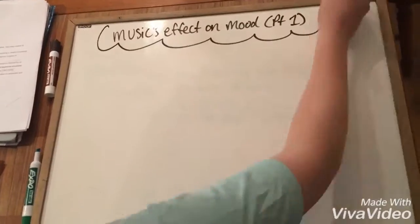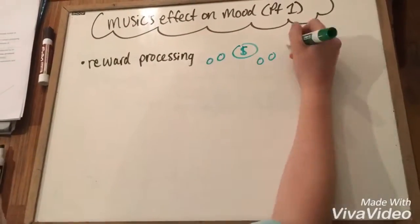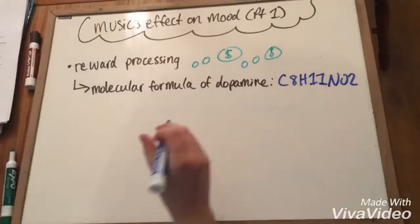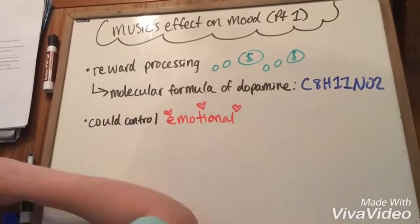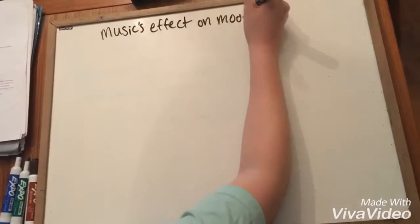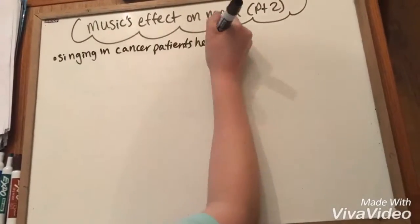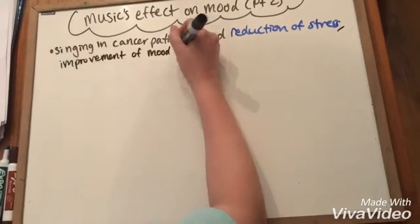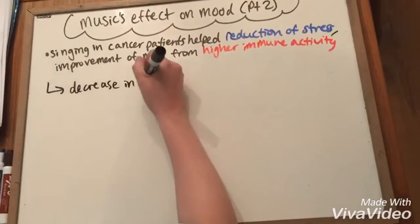Music has a considerable effect on mood, especially through the release of dopamine. Music can also help control emotion by controlling the emotional stimuli's effect on autonomic and physiological responses.